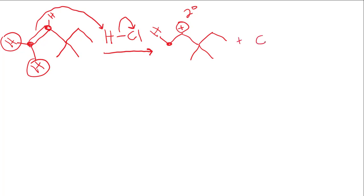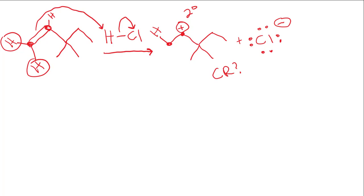We also have the chlorine that left with its eight electrons and a full negative charge. Before the chlorine can do its nucleophilic attack, make sure you never forget to check for a carbocation rearrangement. We always ask: will we get a carbocation rearrangement? We must first assess the stability of the current carbocation — it is secondary, meaning the carbocation carbon has two carbon bonds. However, can the carbocation become more stable? If it moved to the left it would become primary, which would not be good. However, if it moved to the right it could become tertiary.